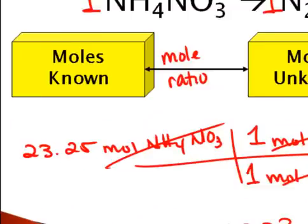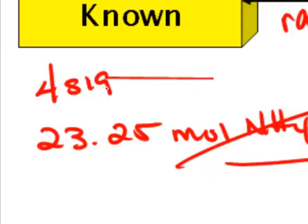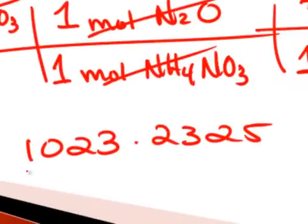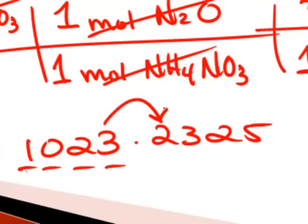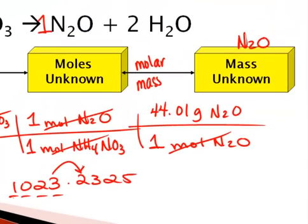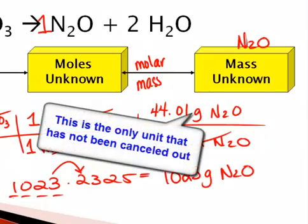In our given, we have four significant figures, so we want four significant figures in our answer. We look at 1, 2, 3, 4 — we're rounding to the ones place. The 3 looks to the right, and the 2 tells the 3 to stay a 3. So our final answer is 1,023 grams of N2O.